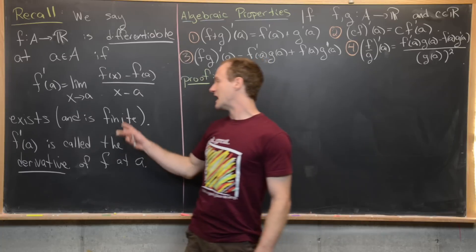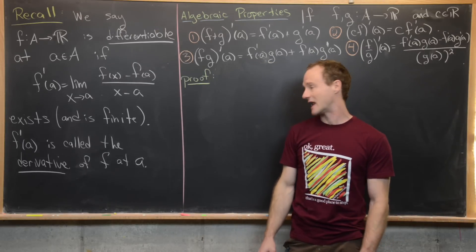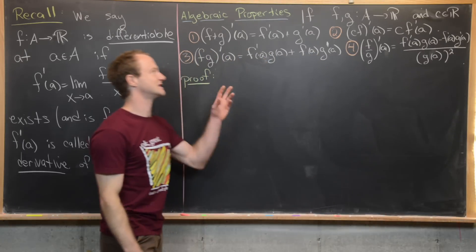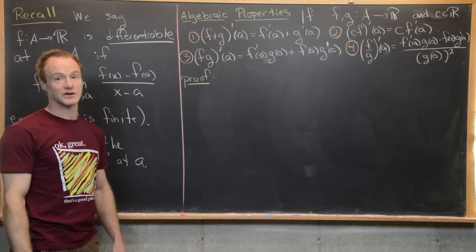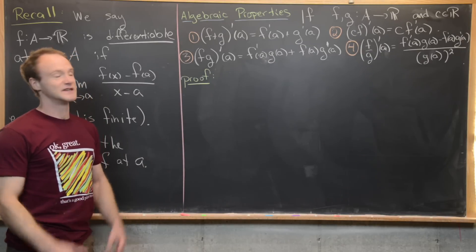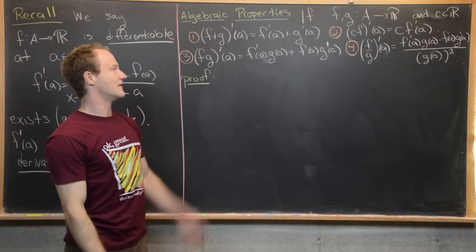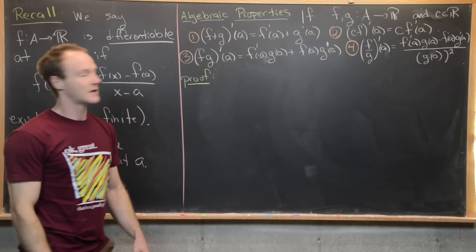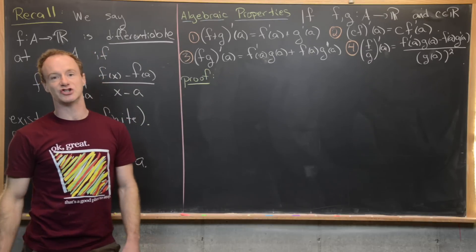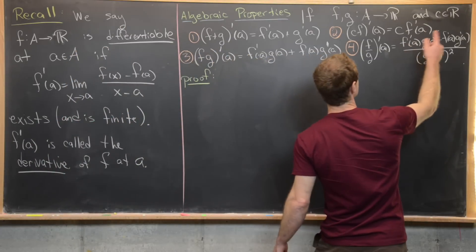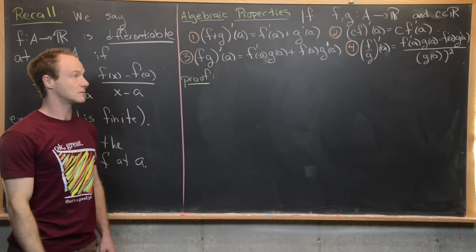If this limit exists and is finite, we call f prime of a the derivative of f at a. The first thing I want to do is look at some algebraic properties of the derivative and differentiability. You could also read these as properties of differentiability — so f plus g is differentiable if f and g are each differentiable, and so on. The one to pay attention to most is that f divided by g is differentiable if f is differentiable, g is differentiable, and g evaluated at a is not equal to zero.